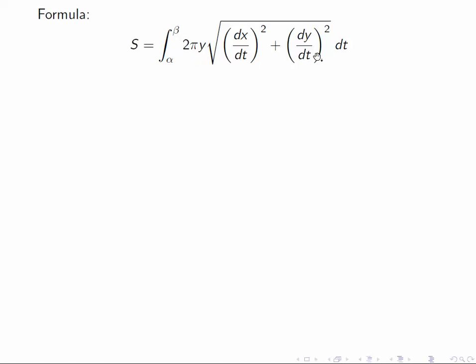So we're going to need alpha to be zero and beta to be pi over two. And then we're just going to have to set, we just need to substitute for these, for y and these derivatives with the corresponding function of t.